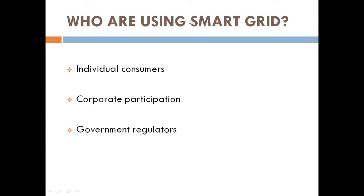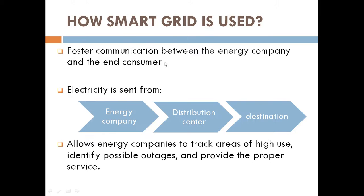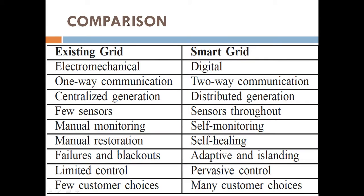Who is using smart grid? Of course, individual customers, there is some corporate participation, and government regulators. How is smart grid used? There is foster communication between the energy company and the end users — a sense of understanding between energy company and end user. Electricity is sent from the energy company through some distribution center to the destination, allowing energy companies to track areas of high use, identify possible outages, and provide proper services.